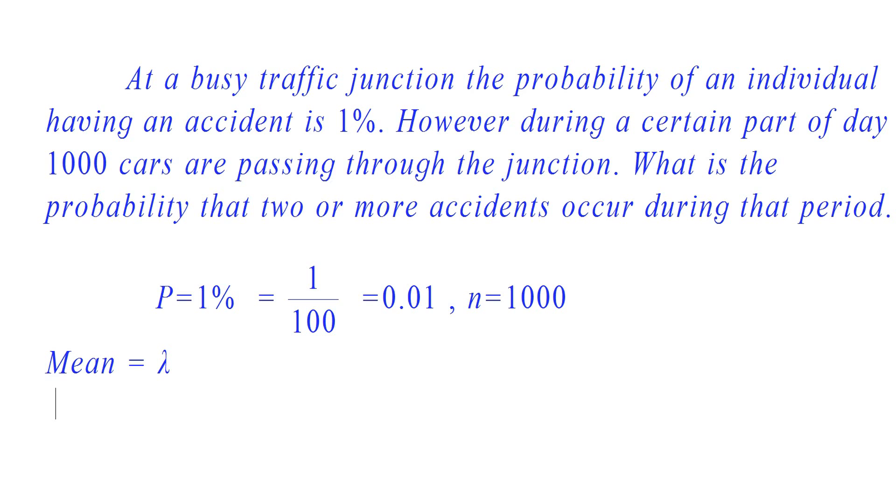We know that in Poisson distribution, mean is equal to lambda. Lambda is equal to np. Here, n is 1000 and p is 0.01. Therefore, we get lambda is equal to 10.